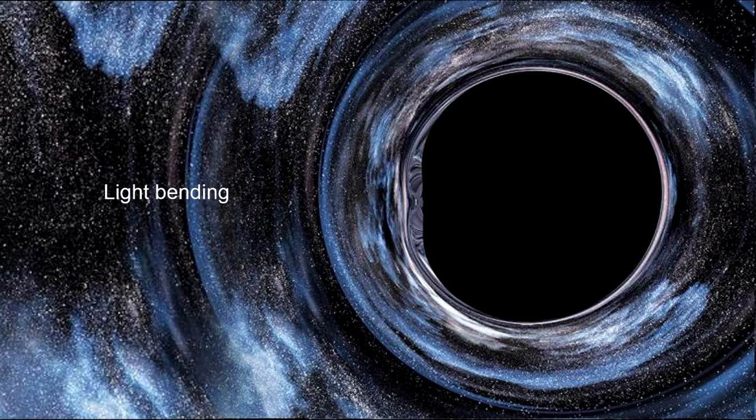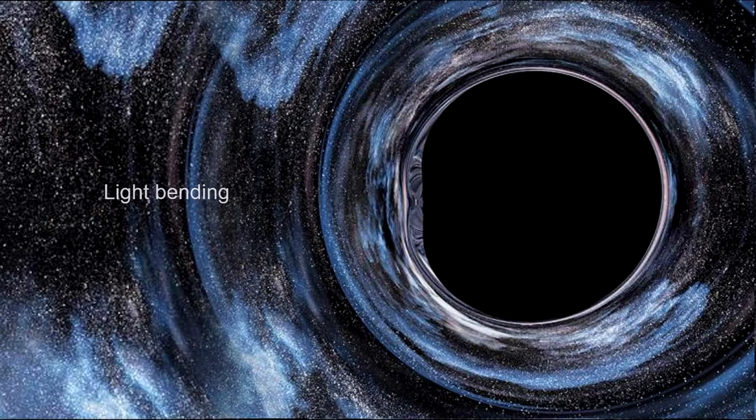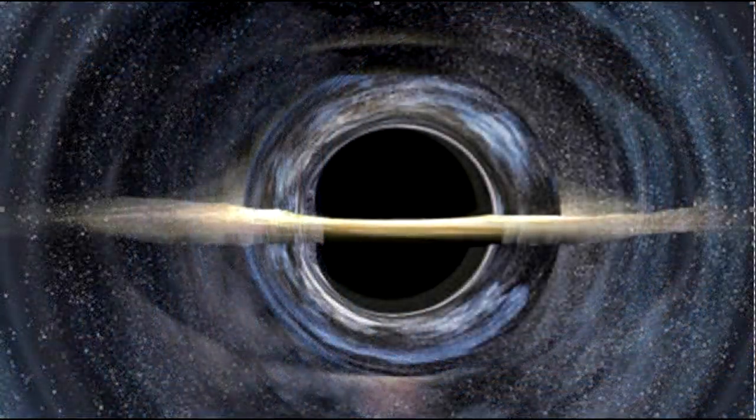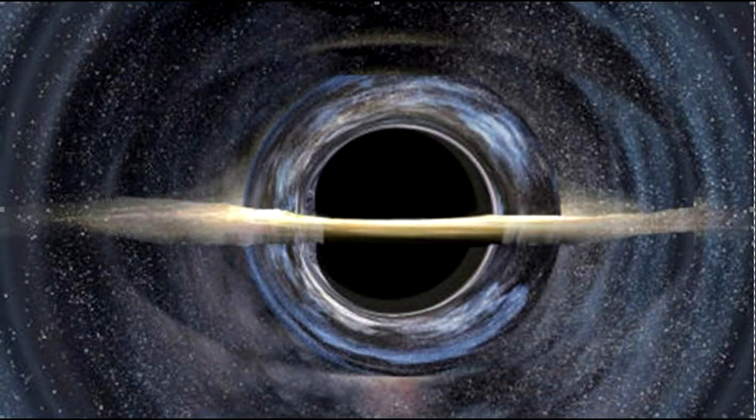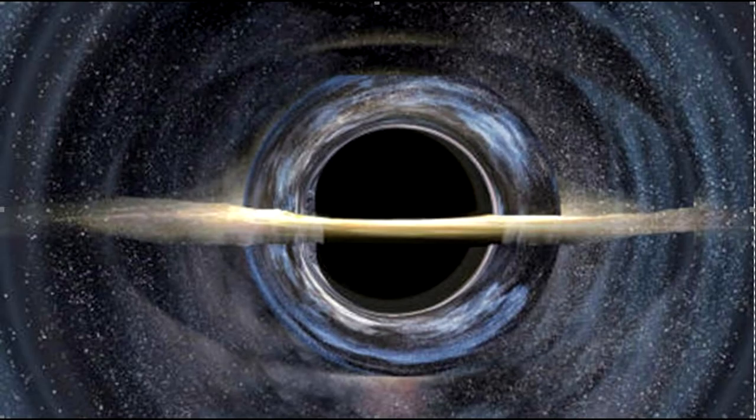Further out, we see the dislocation of star positions due to the bending of light by the gravity of the black hole. This black hole has the remnants of an accretion disk that is no longer feeding the black hole.